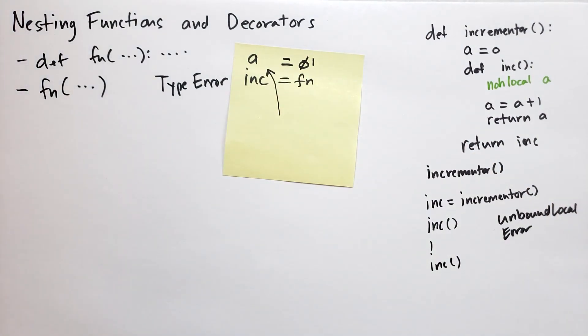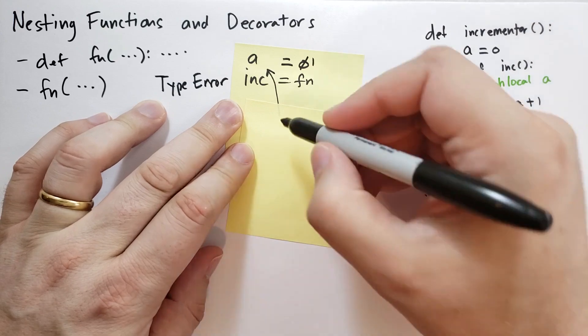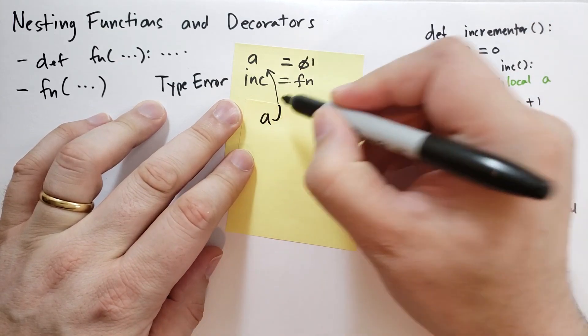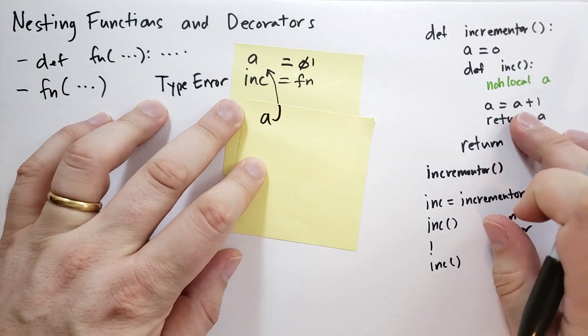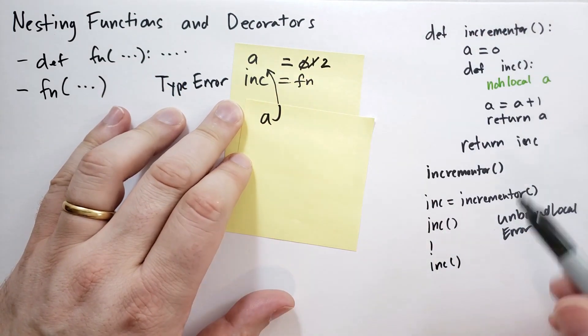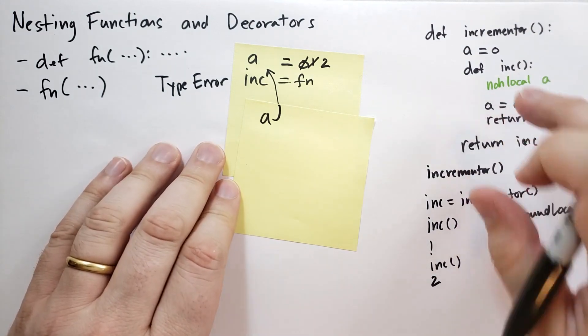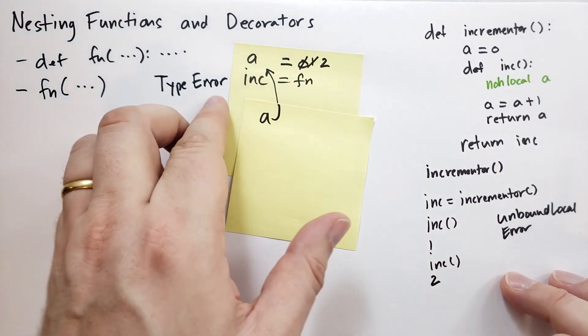And we create a new namespace for the new function call. And this one says non-local a as well, so we have a that points up there to that a, and so we say a equals a plus one, so a plus one is two, so we assign a to two. Now it's worth two, and we return a, so this one returns two. And you see how that works. That's how the non-local statement works, this is how nested functions work.